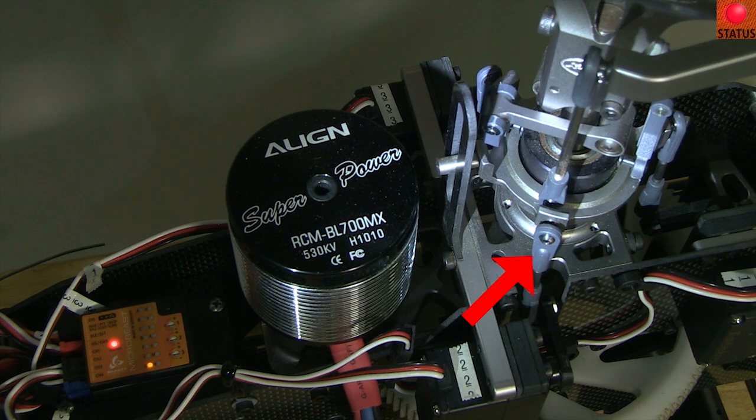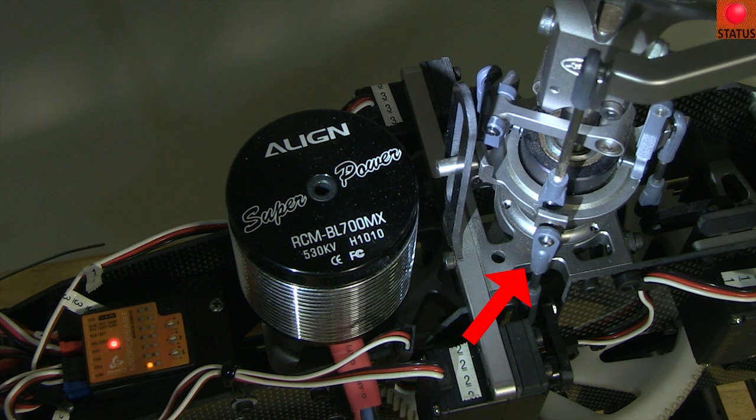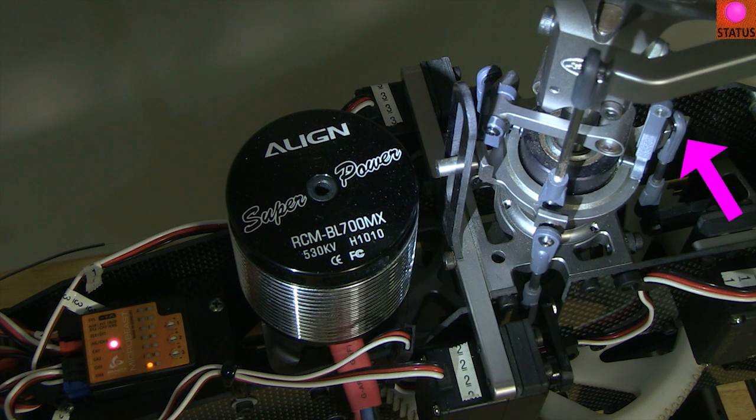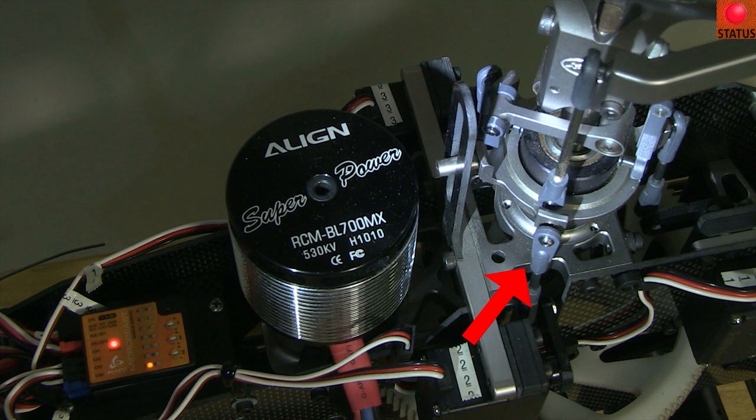Now you can move the rudder stick either direction. As the status light changes color, you'll see one of the servos bounce. This indicates you can adjust the center of that servo. When the status light goes off, all the servos return to their factory center. If you adjust a servo, the Microbeast remembers where you put it and it'll be there until you change it again.